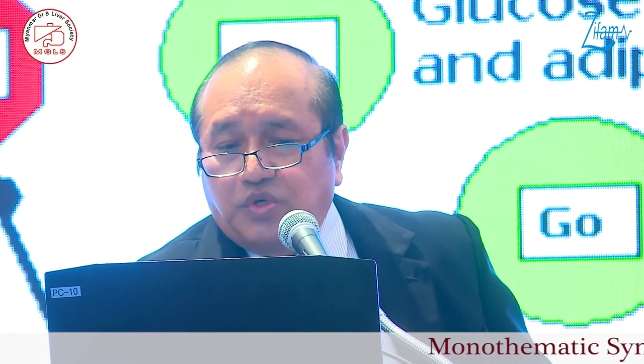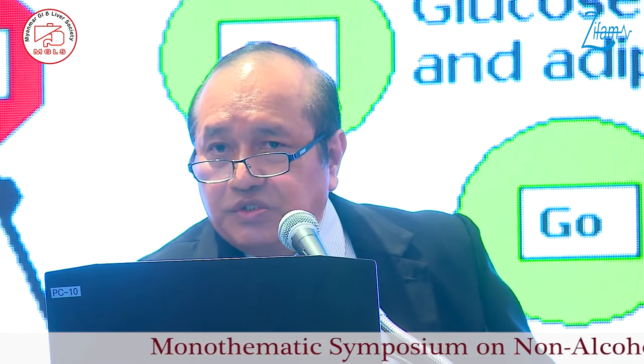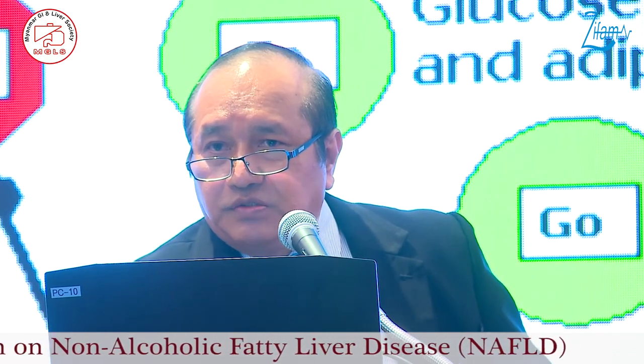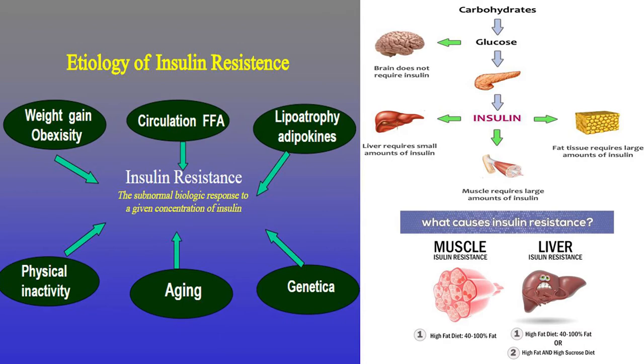In NAFLD, there is increased fat lipolysis — without insulin to prevent it. Without insulin, there is an increased chance of lipolysis, leading to NAFLD. So in insulin-resistant cases, the stimulators for insulin resistance are obesity, circulatory free fatty acids, lipolysis, genetics, aging, and physical inactivity.